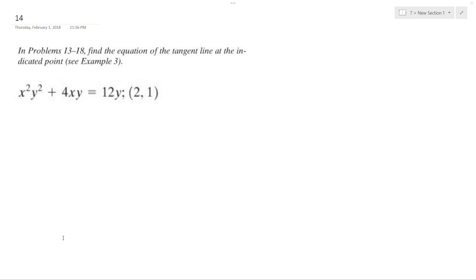We want to find the equation of the tangent line at the point 2 comma 1, and to do that we're going to use implicit differentiation.